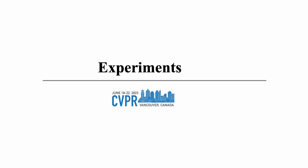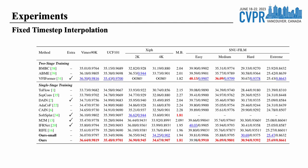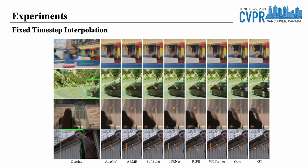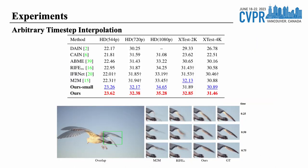For fixed time-step interpolation, our approach achieves state-of-the-art performance on almost all test sets, except for the easy set of SNU-FILM, which we attribute to not applying interframe attention to high-resolution features for a balance between performance and speed. As input size increases, compared to the previous SOTA model VIFORMER, our model dominates in speed and memory usage while maintaining better performance. For qualitative comparison, our model provides superior estimation of object locations in intermediate frames under large motions and better maintenance of texture information. For arbitrary time-step interpolation, thanks to explicit motion features, our approach achieves best performance on all test datasets and exhibits better temporal consistency for complex motions in multi-frame interpolation.